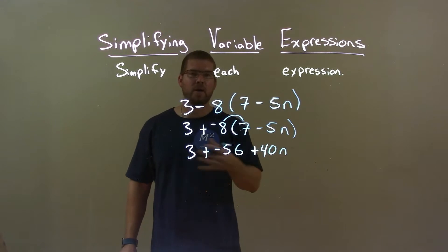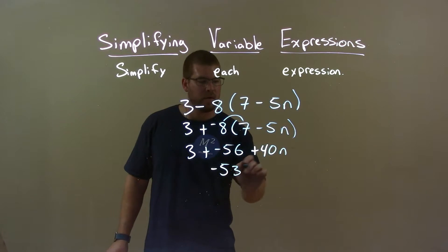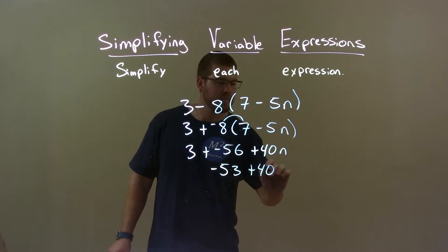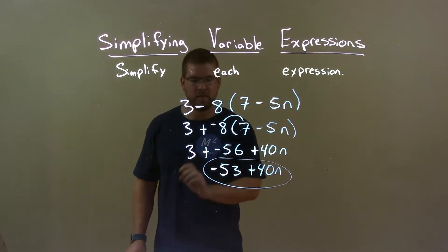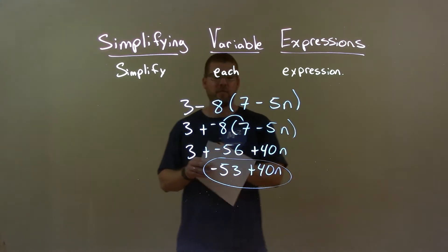Now we just have to combine our like terms. Well, 3 plus a negative 56 is a negative 53. Bring down the 40n. And so my final answer here is just negative 53 plus 40n.